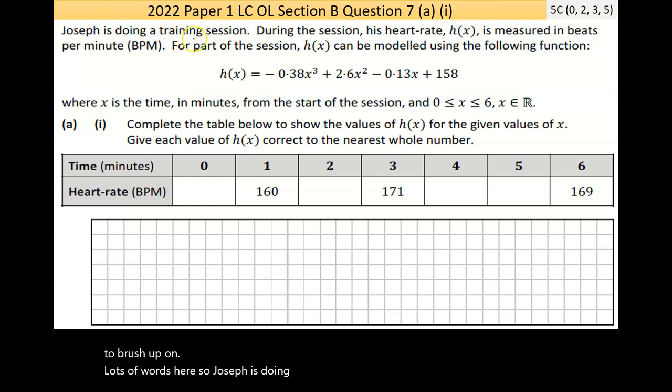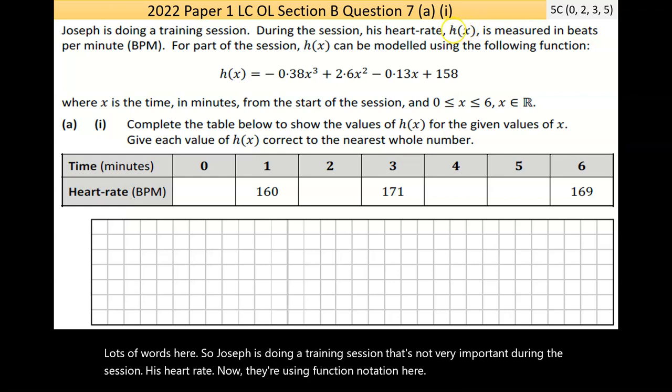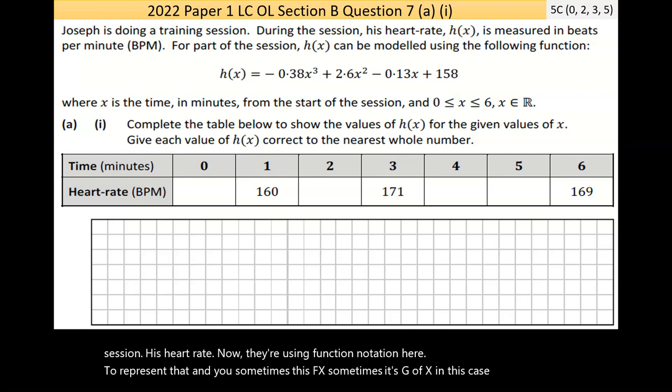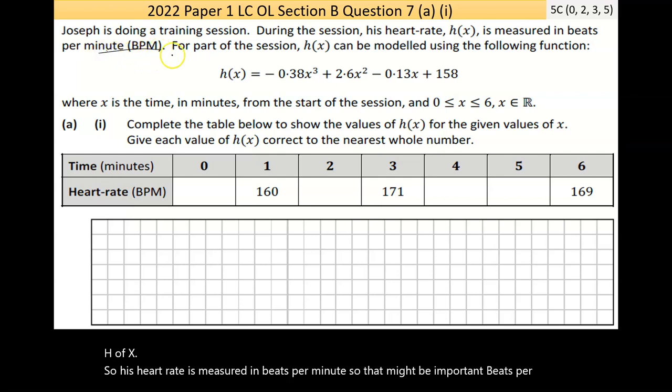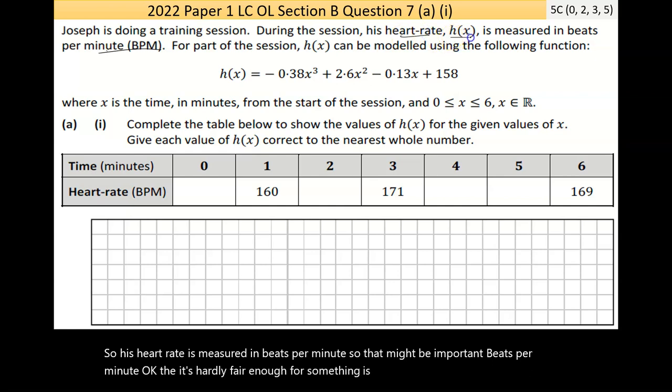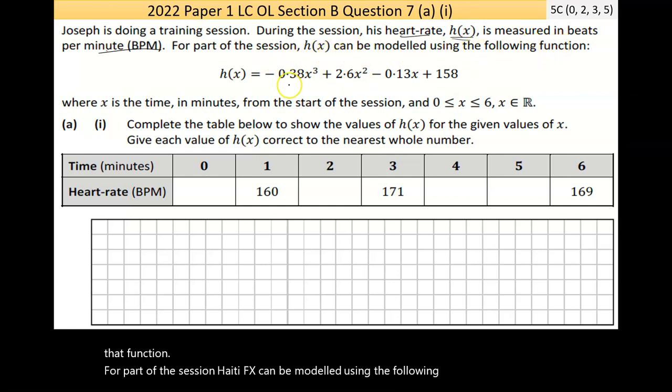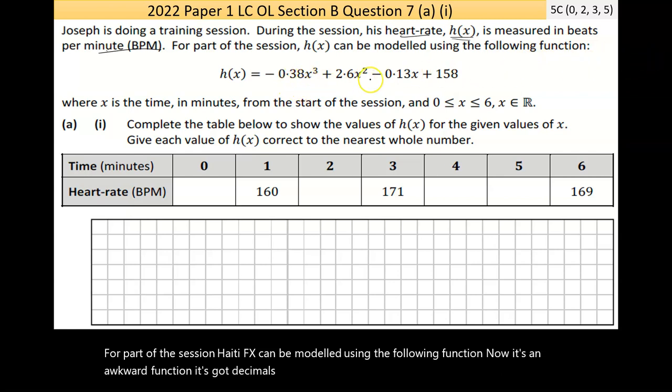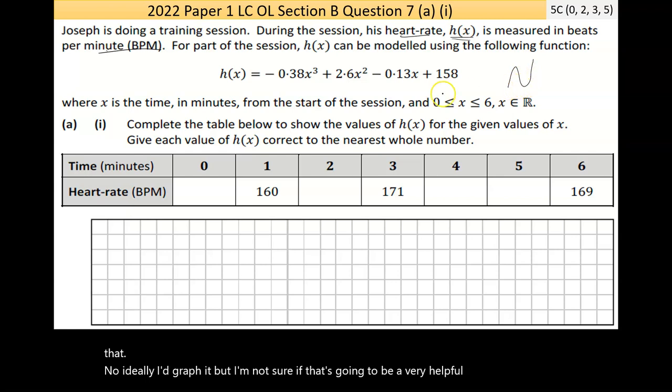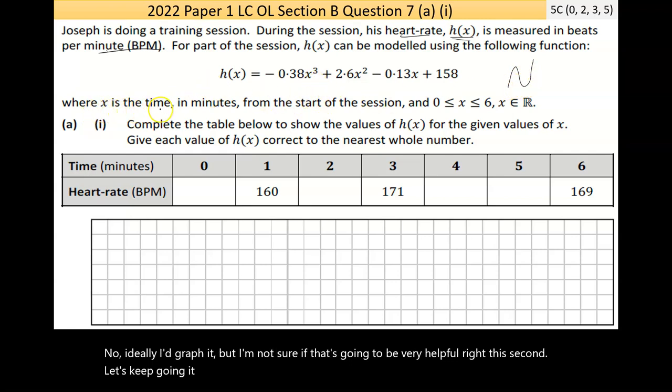Question 7 is the first question of section B, and they're generally very long. So we're in for a long video. As always, I'd suggest pausing and trying the question yourself. Lots of words here. Joseph is doing a training session. During the session, his heart rate is measured using function notation, h(x), in beats per minute.